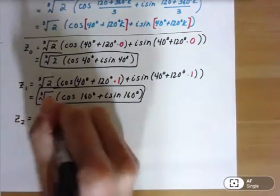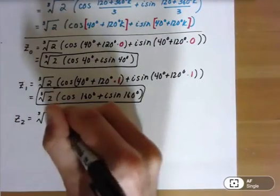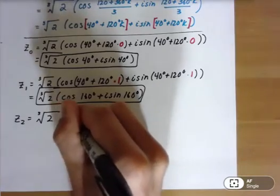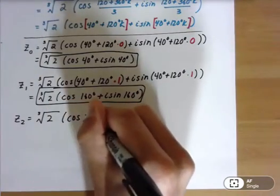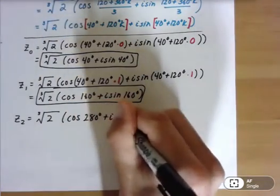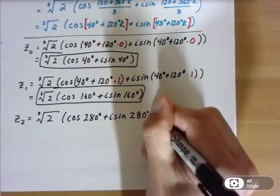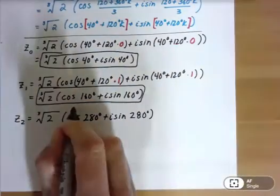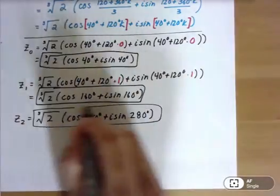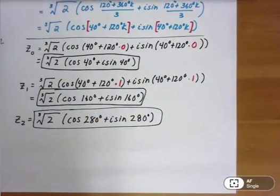So if we slow this down and go ahead and just do cube root of this, your final one is going to be cosine of 280 degrees plus i sine of 280 degrees as well. So there's your third complex cube root. Those are the three.